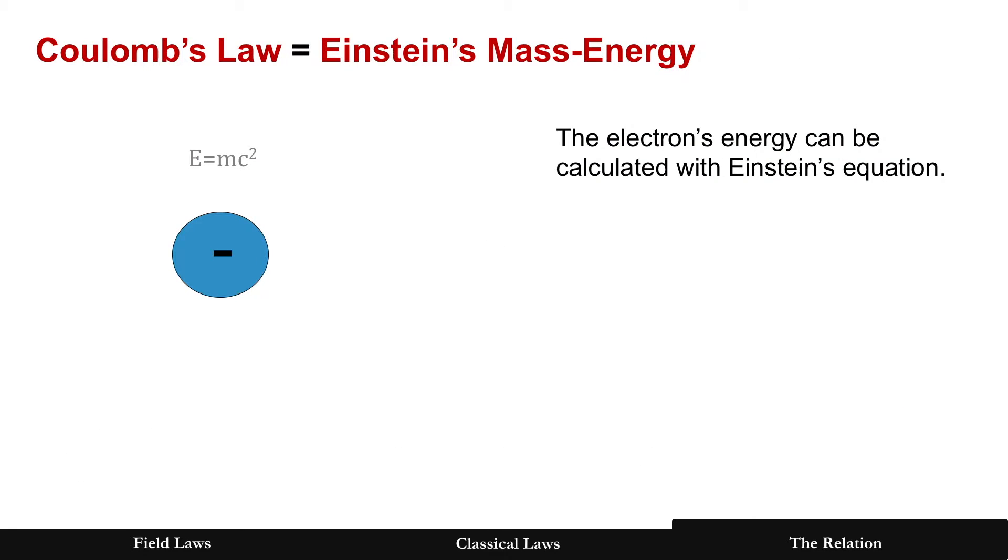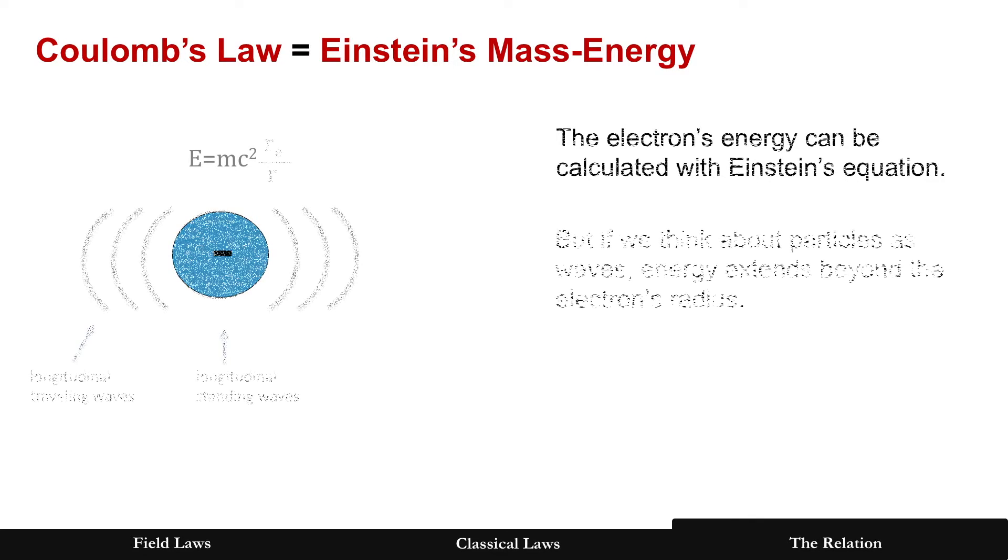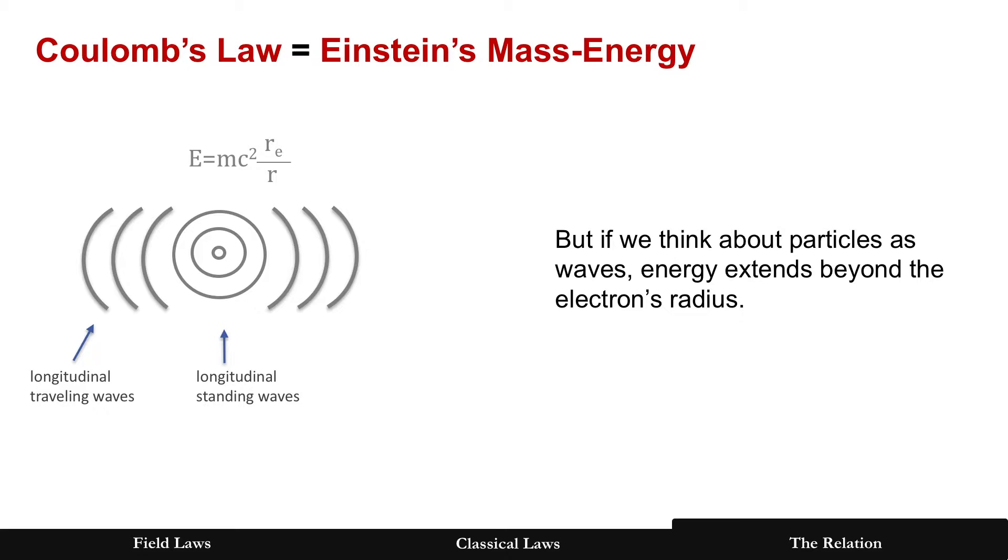So the first law when at rest: Coulomb's law is Einstein's mass energy when you think of it extending beyond the electron's radius as shown.